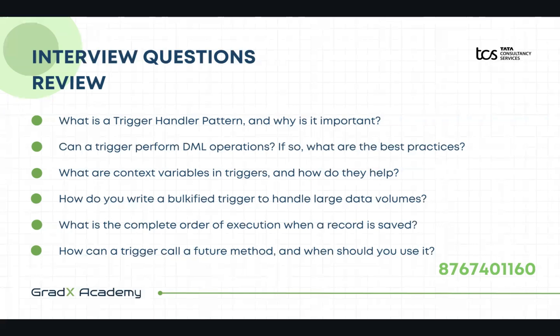What is the complete order of execution when a record is saved? The order of execution has nearly 20 steps. It includes first validation rules, then before triggers, then after triggers, then workflow rules, then process builder and escalation rules, roll-up summary updates, and finally the data is committed to the database. A separate video on GradX Academy's channel covers all 20 steps in detail.